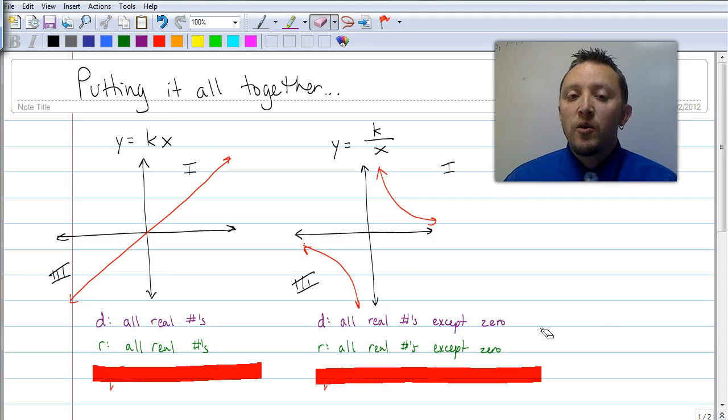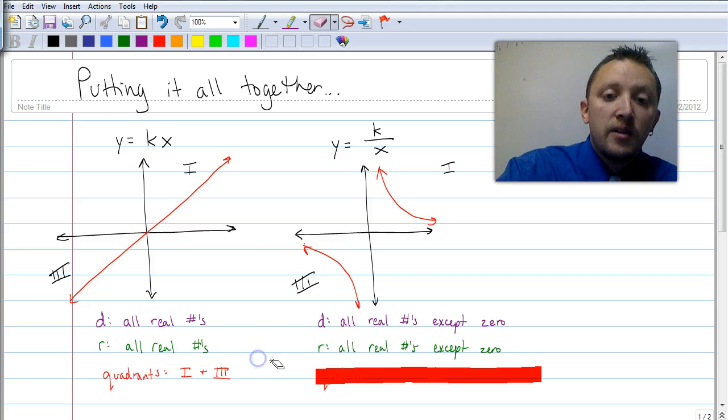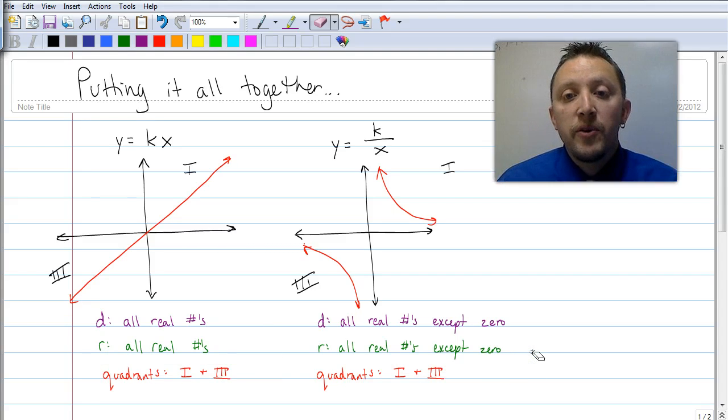So you might see some similarities here where the first one, it's all the numbers, any number you can think of. And the second graph, it's any number you can think of except zero. And like I already said, the quadrants for both of these are in quadrants one and three.